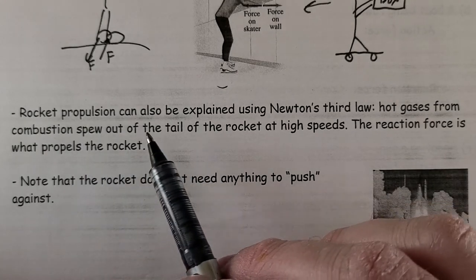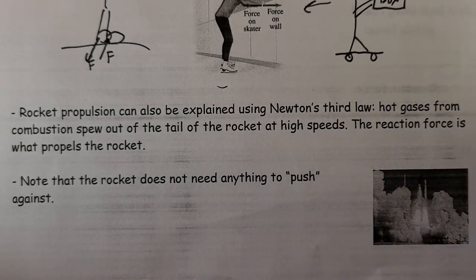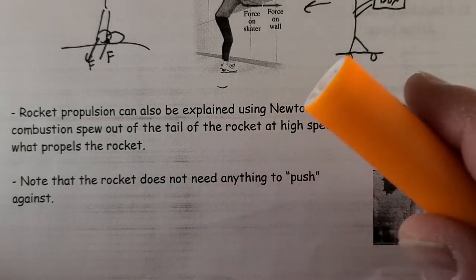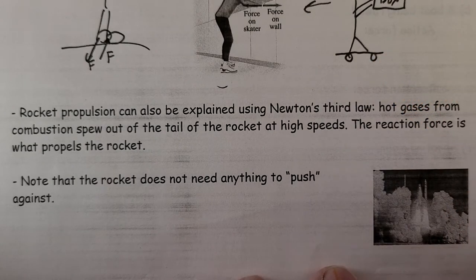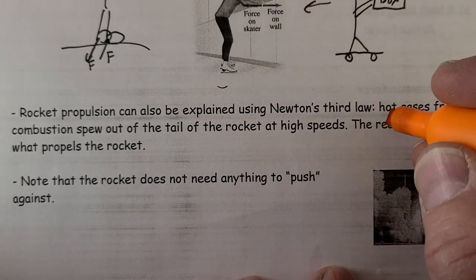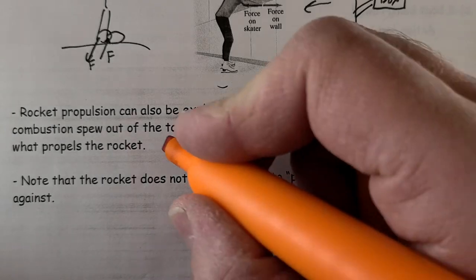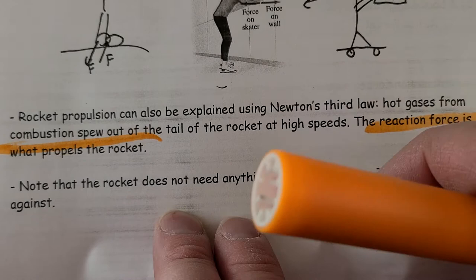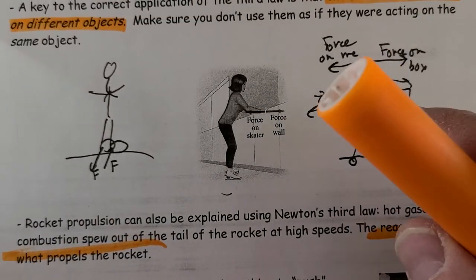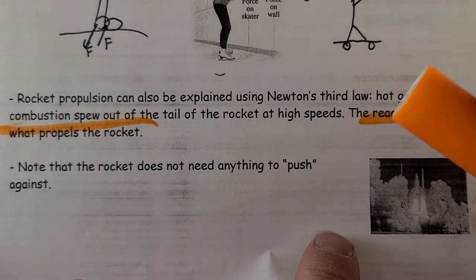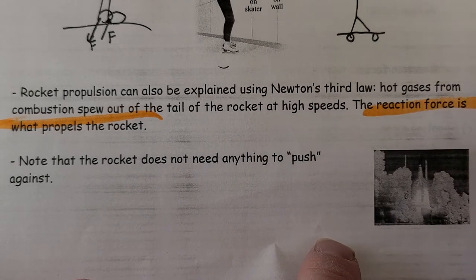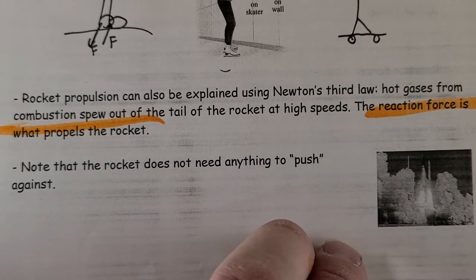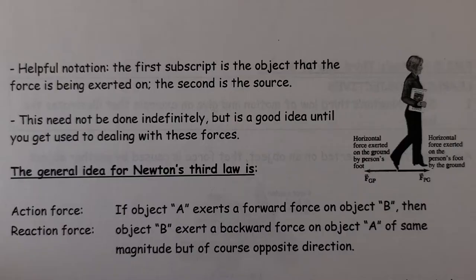Rocket propulsion can be explained using Newton's third law. Hot gases from combustion spew out of the tail of the rocket at high speeds. The reaction force is what pushes you forward. And note, the rocket doesn't need anything to push. It's like here, I'm pushing a box, and if we're throwing out gases, we don't need anything to push. So let's see why on the next page.